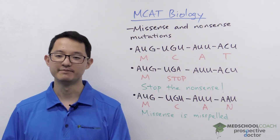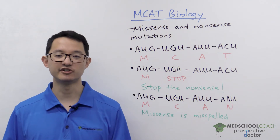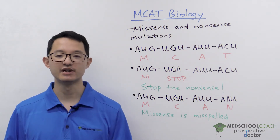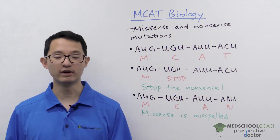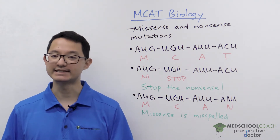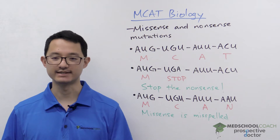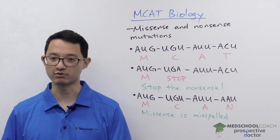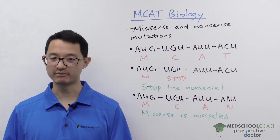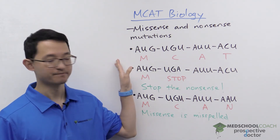Missense and nonsense mutations are two types of point mutations, and point mutations are a one nucleotide substitution in the DNA sequence. To better understand how missense and nonsense mutations work, and also go over good mnemonics for memorizing them, let's take a look at what we have here on the board.